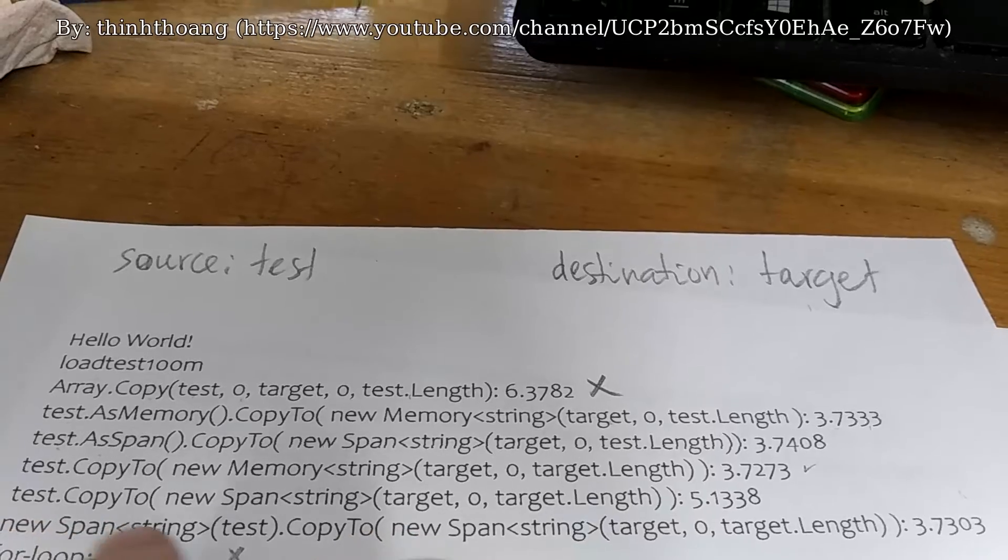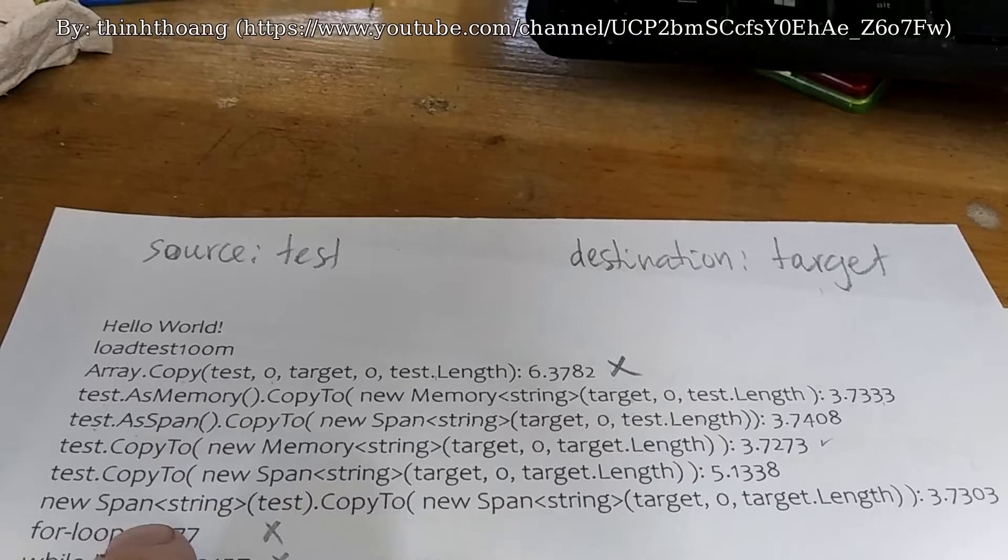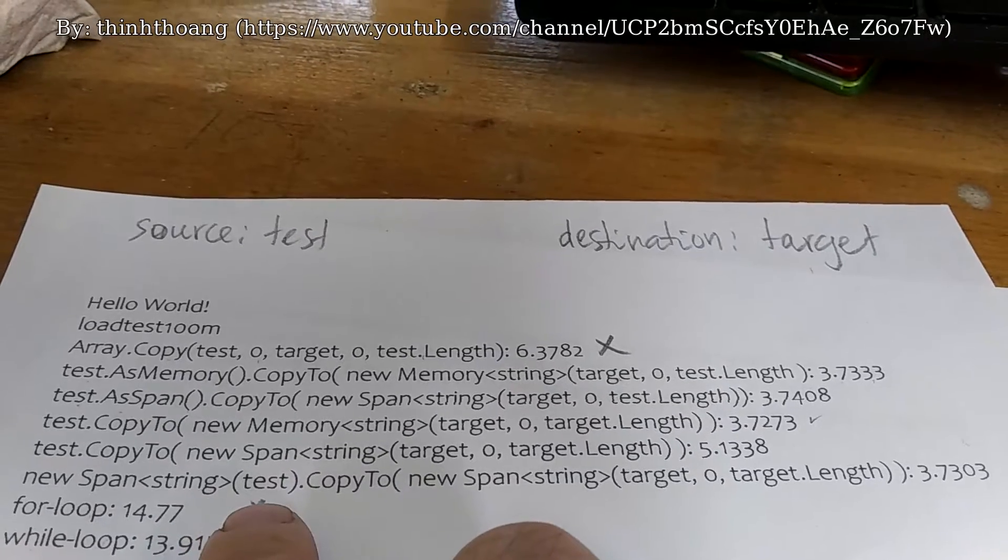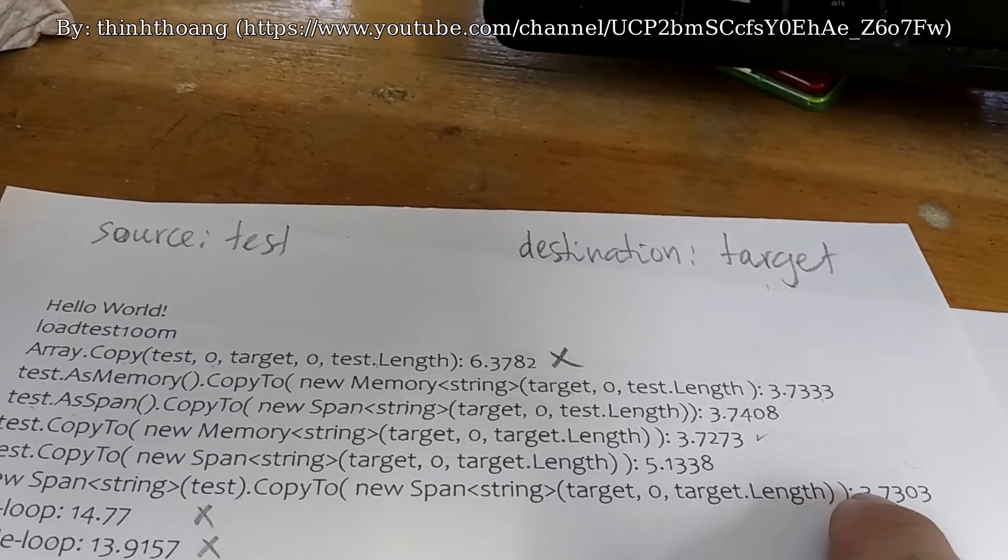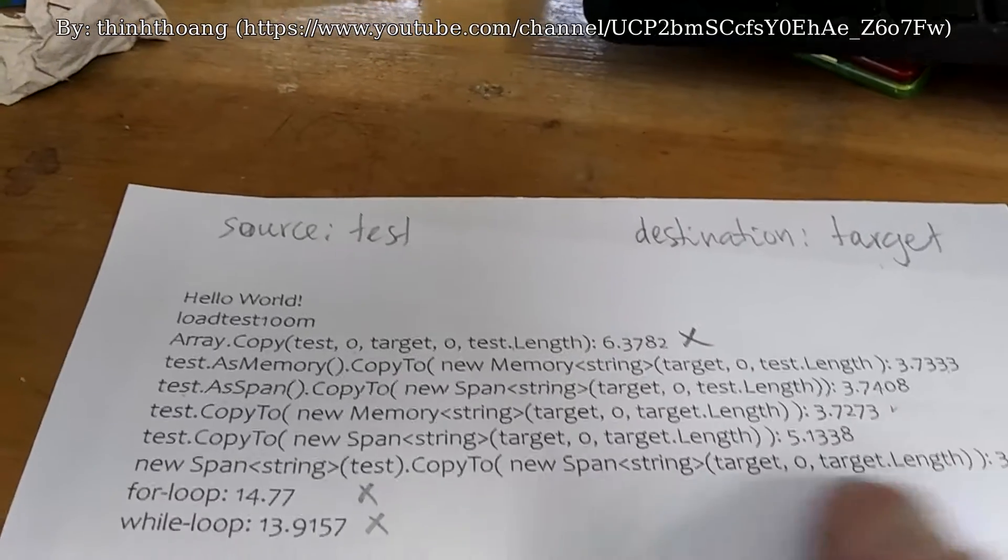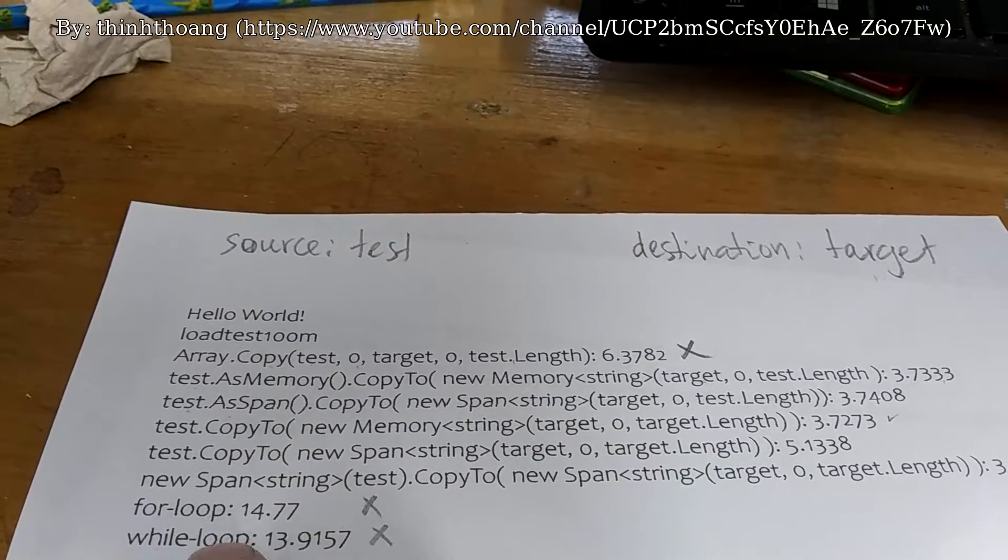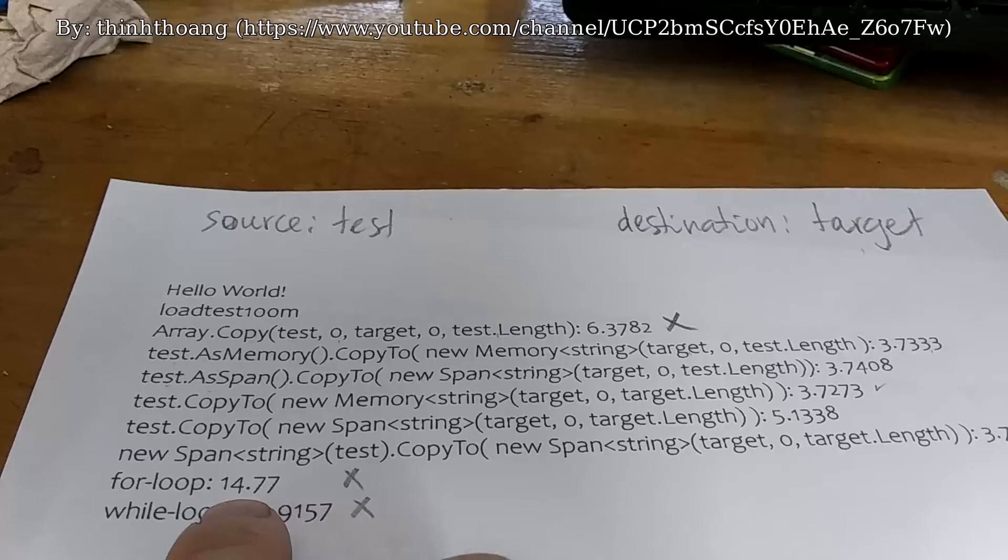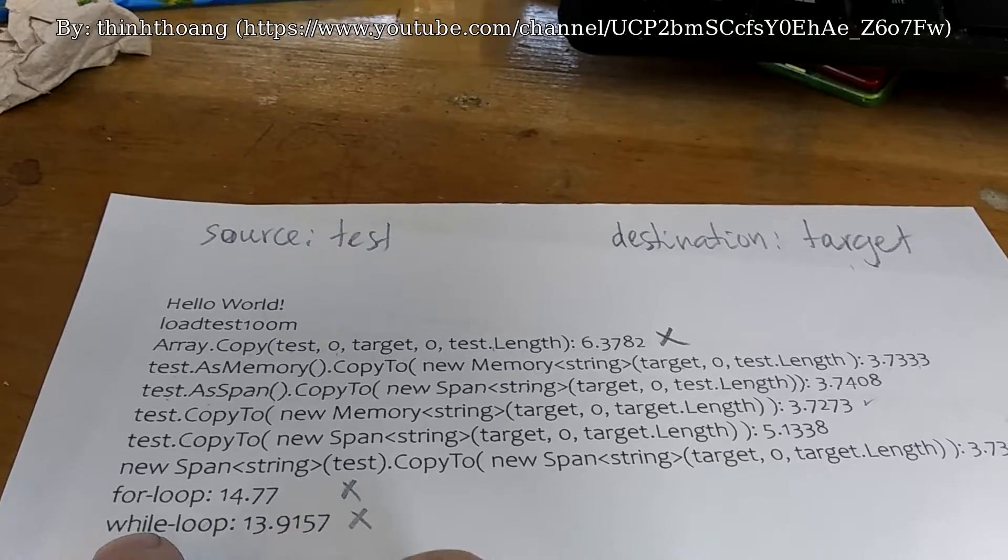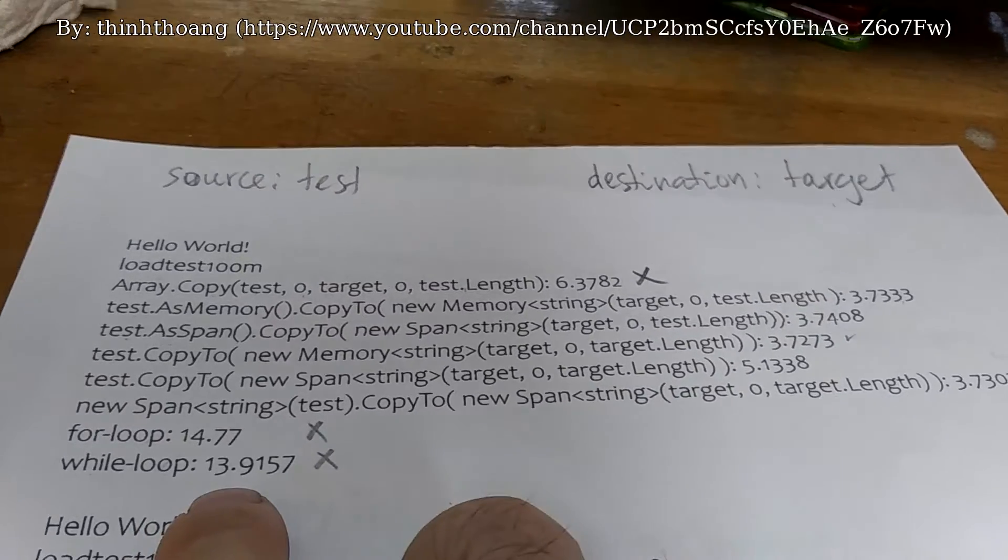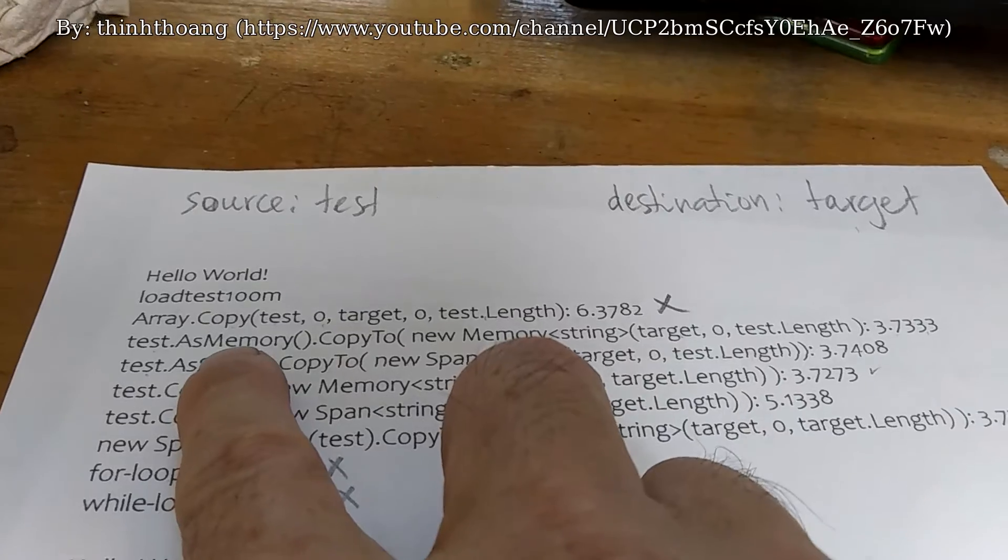Memory, test.CopyTo() new span. New span from the source array copy to new span from the target array. For loop and while loop are slow. For loop is 14.77 milliseconds, while loop is 13.91 milliseconds. So you can...